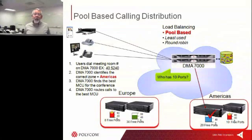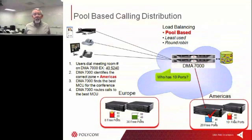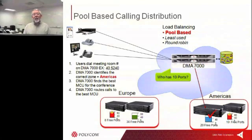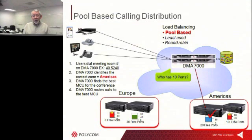So how does DMA do its magic? As you configure your DMA, you set up a pool of resources, and those resources will be coming from multiple RMX or Kodian bridges. When someone initiates a call, they'll request certain levels of resources, and DMA compares that request to the available bridges that are online and can take a call at that time. Whichever bridge is least being used and fits in the pool requirement will be given the conference.